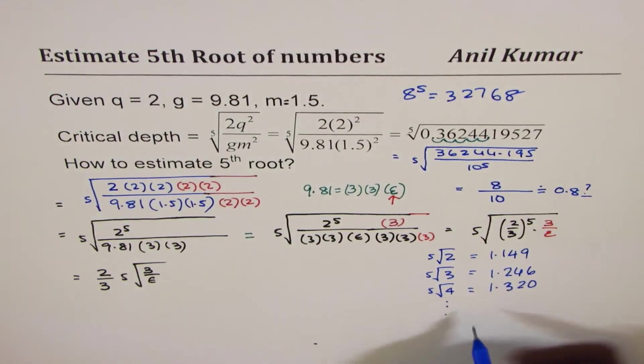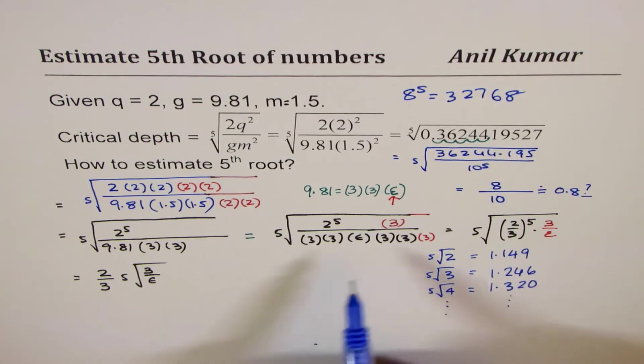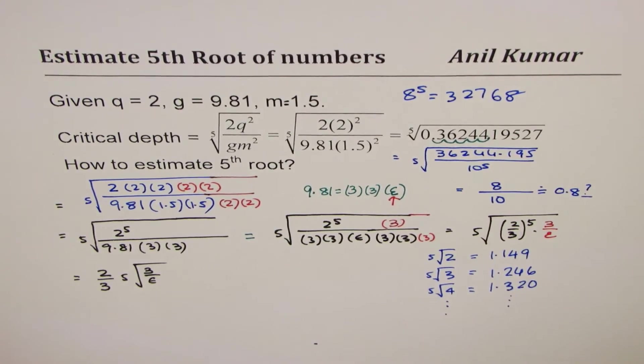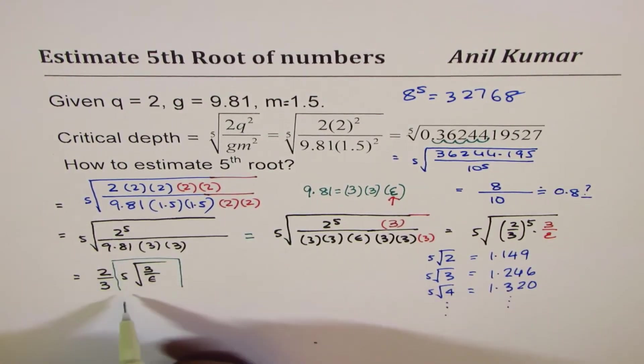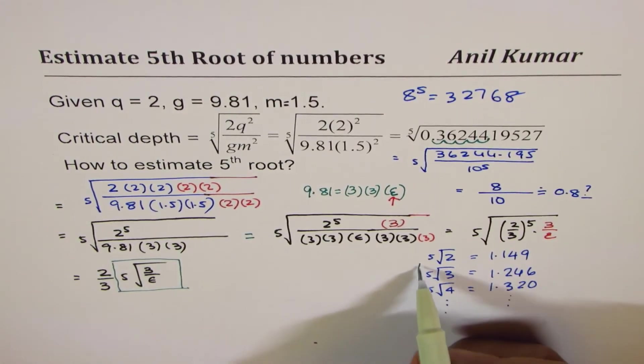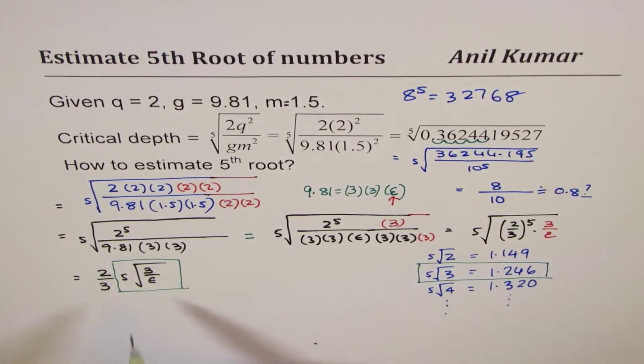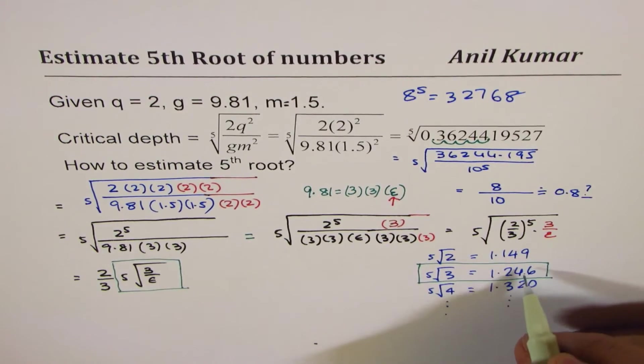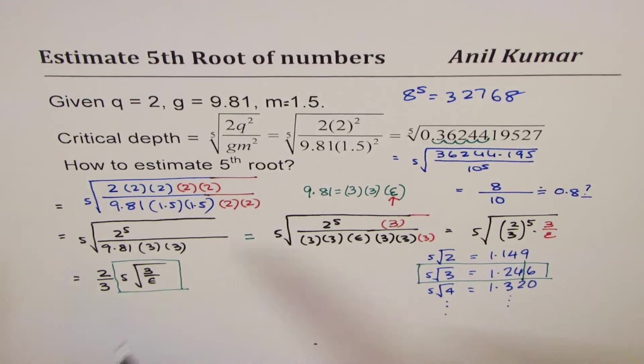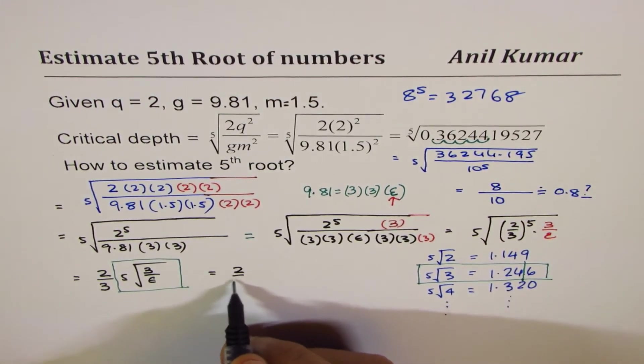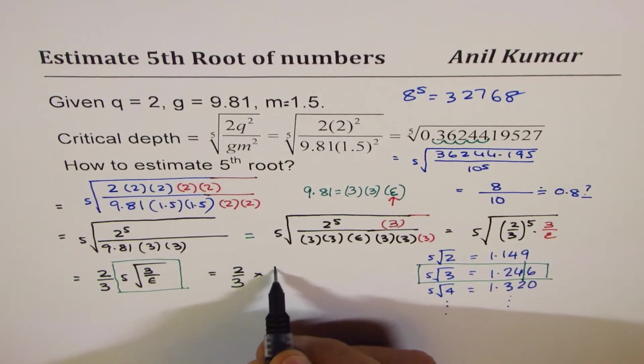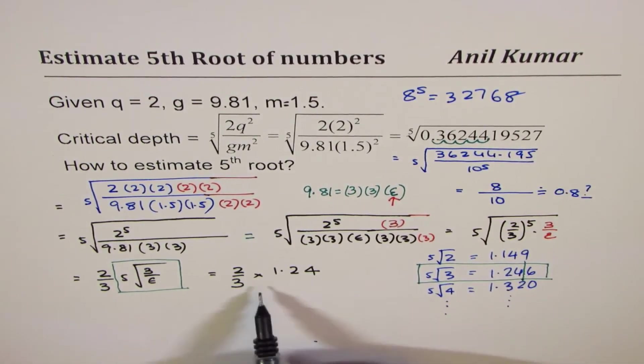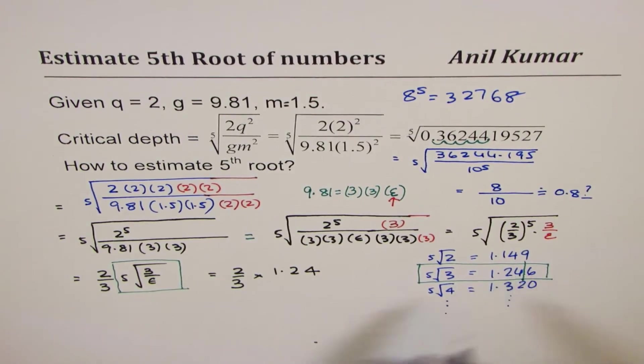So likewise, we have some numbers which will help us to fine-tune the solution. The idea here is now to multiply 2 over 3 with a number which is close to this number. Since we have to divide this, I have to take a smaller number. So let me take a smaller number, let's say 1.24, which is not bad. So what I will do here now is I'll multiply 2 over 3 with 1.24, since that is slightly lower than that.